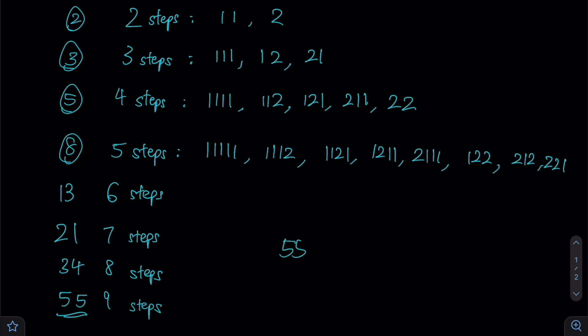And therefore, in total, there would be 55 possible ways for us or rather for Jonathan to climb such a staircase.